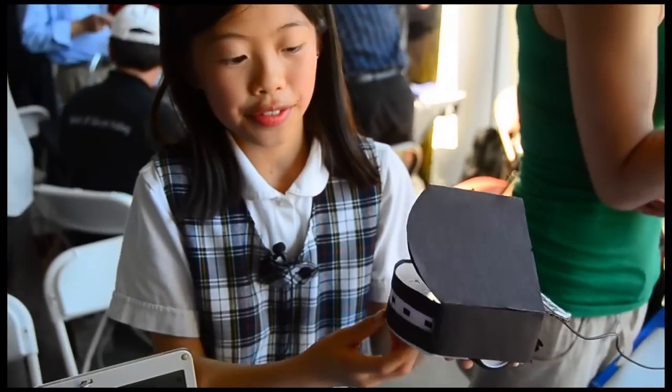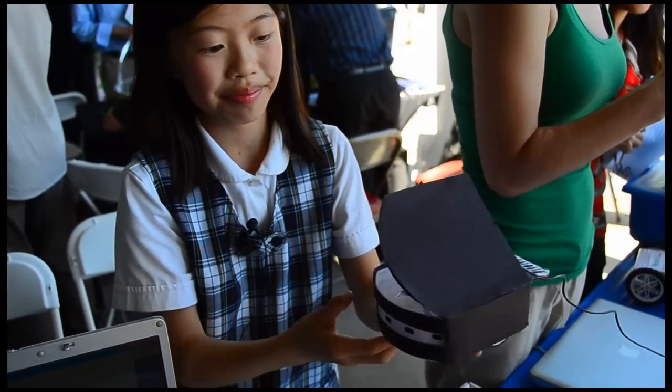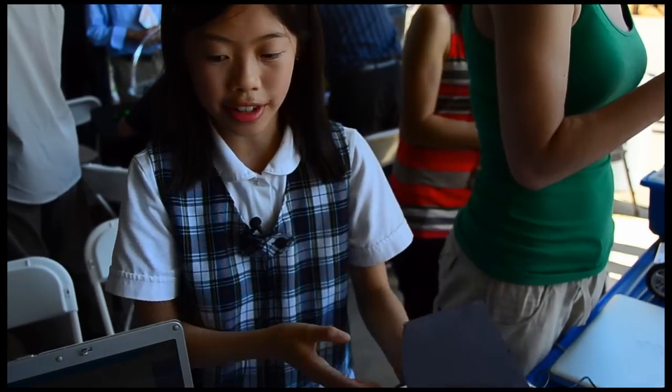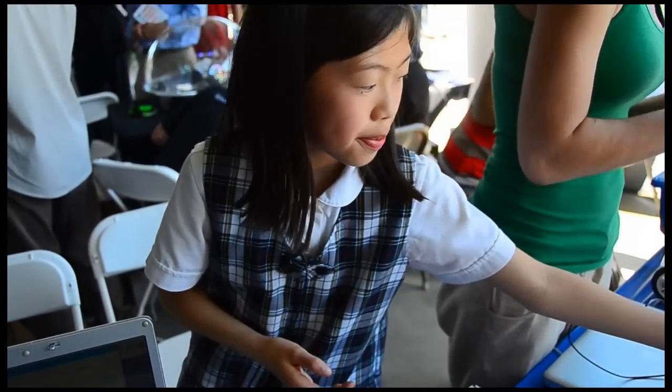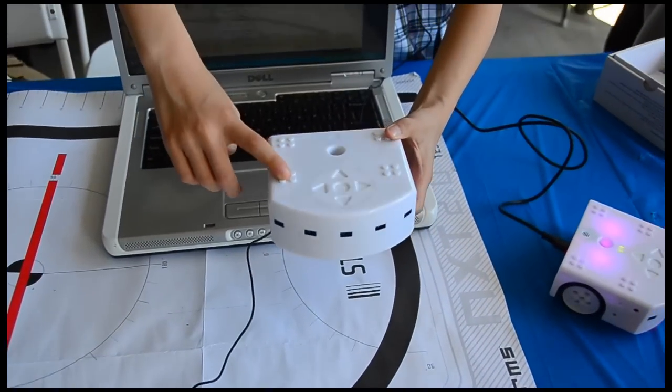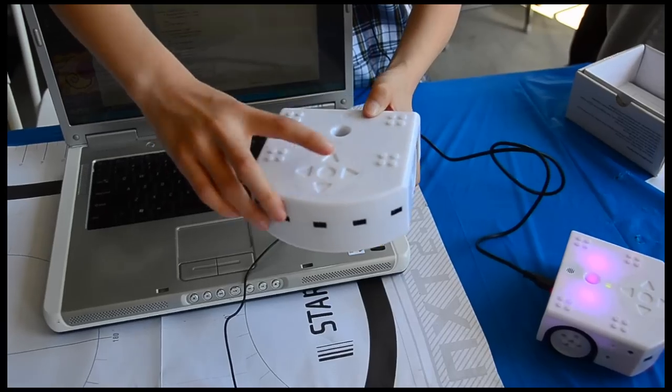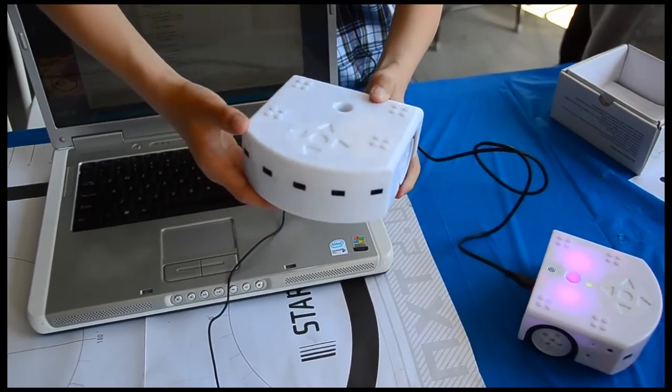And then since there are not enough sensors to play the whole scale, then you can program two sensors to play another note. And so you can also build Legos on the robot, so if you want to build up, then you can use the Legos. And here are the buttons that you can use to control the robot.